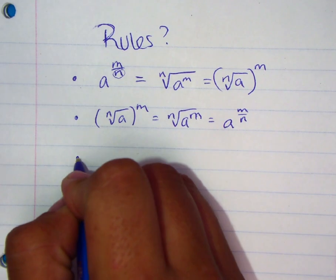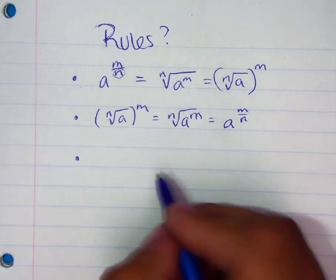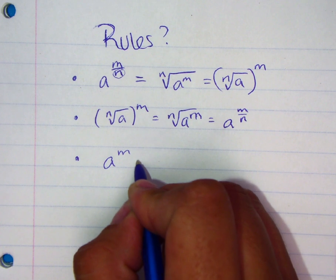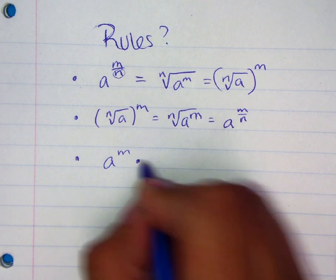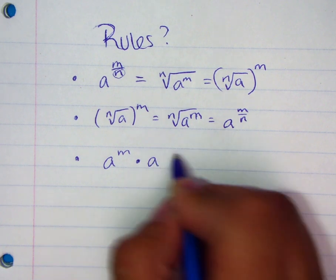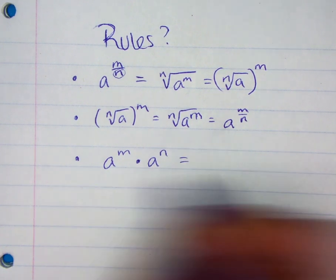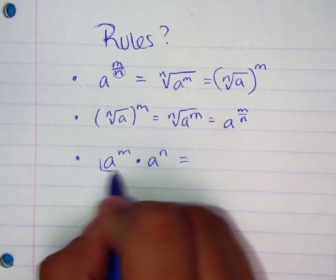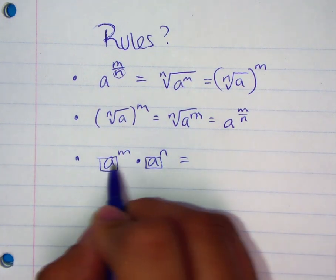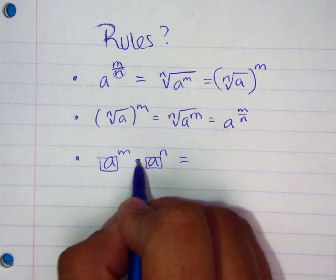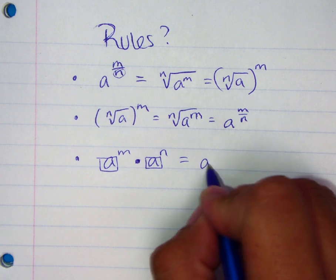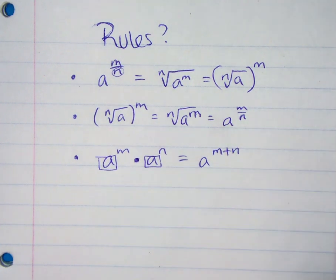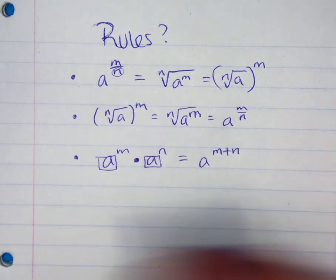Another rule is what happens when you have a base with an exponent multiplied by another base with another exponent. If you recognize they are the same base, and because you're multiplying them, you're going to add the exponents. That's another rule.